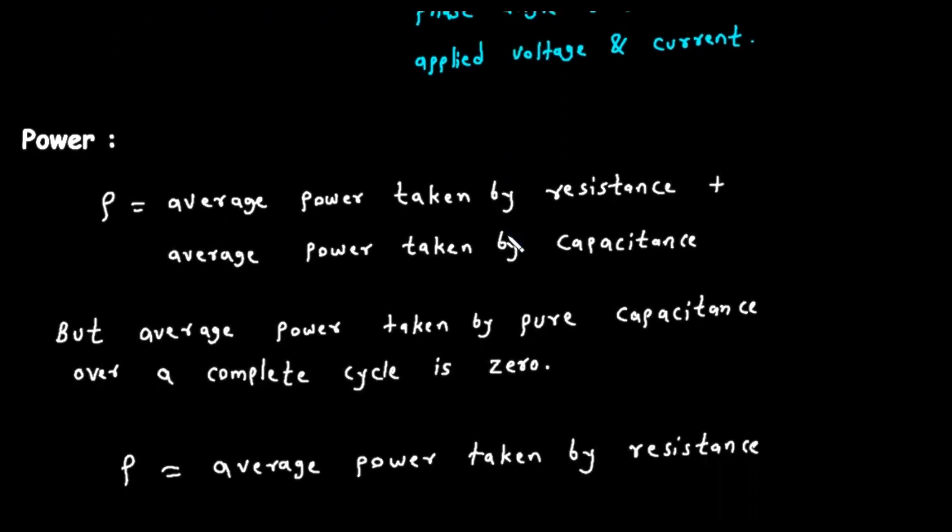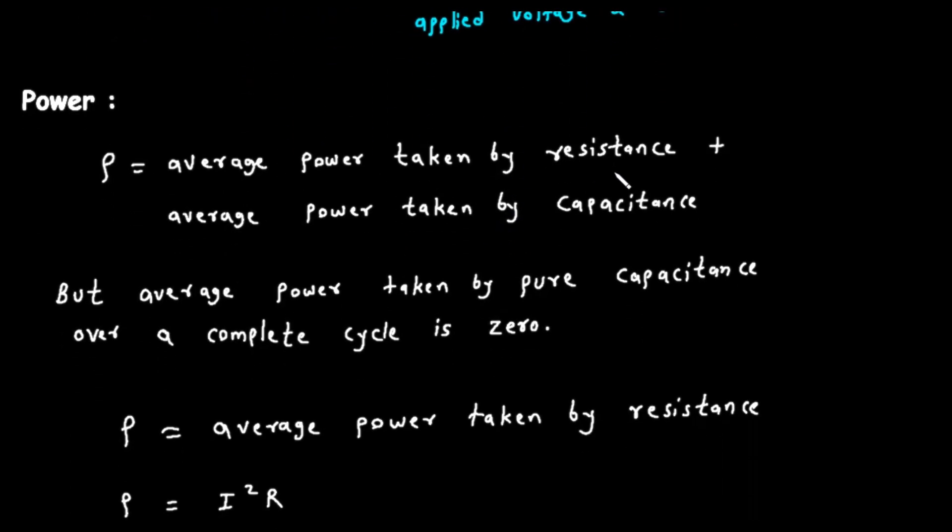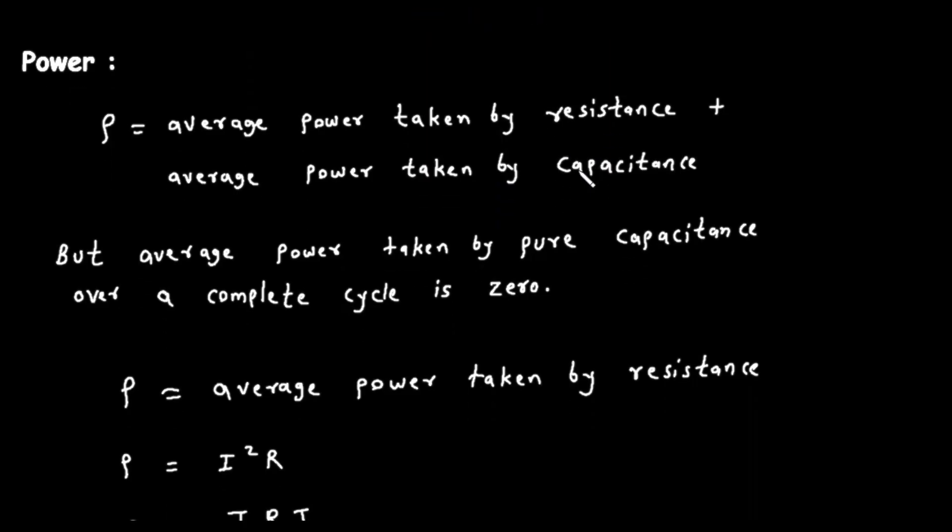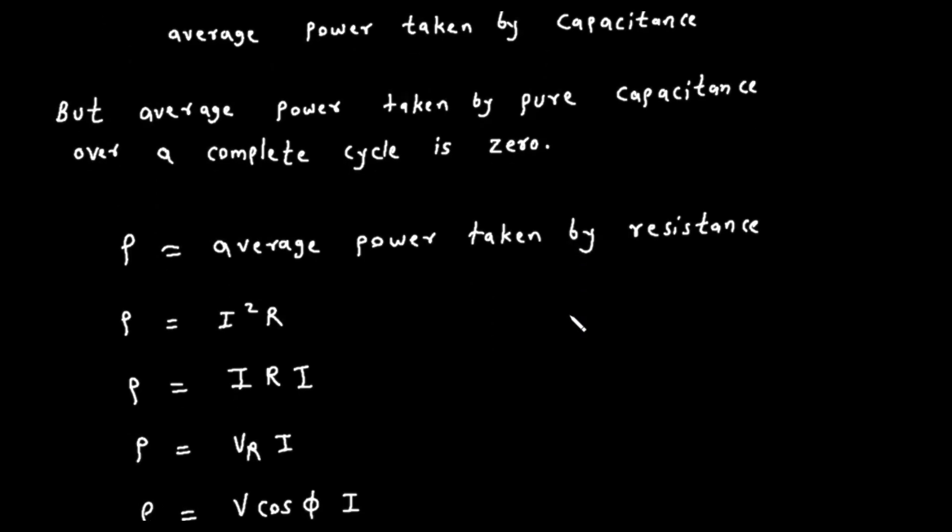Finally, let's talk about power. The average power p consumed by the circuit is the power that does real work, which in this case is converted into heat by the resistor. The total average power is the sum of the average power taken by the resistance and the average power taken by the capacitance. But here is a key concept, an ideal capacitor consumes zero average power. In the first part of an AC cycle, it charges up, taking energy from the source and storing it in its electric field. In the second part of the cycle, it discharges, returning that exact same amount of energy back to the source. Over a complete cycle, the net energy taken is zero. Therefore, all the average power consumed in a series RC circuit is dissipated by the resistor alone.